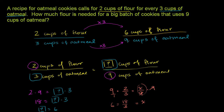For a really simple problem like this, you could just use common sense. If you're increasing the cups of oatmeal by a factor of three, then increase the cups of flour by a factor of three.